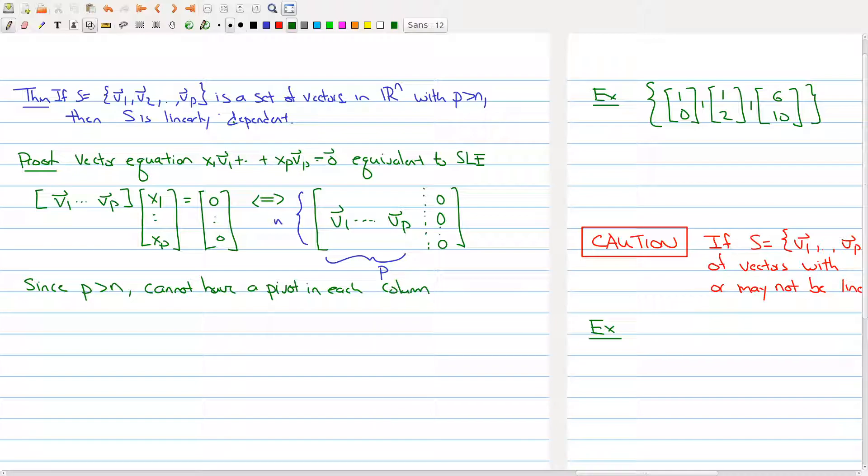Since we can't have a pivot in each column, that means that the system of linear equations has a free variable. Now, because this is a homogeneous system, we know that it always has one solution.